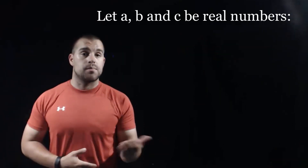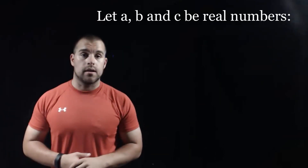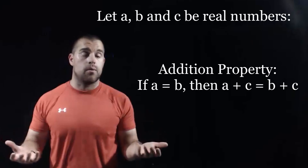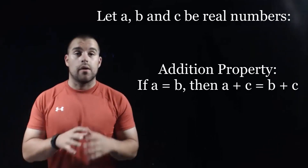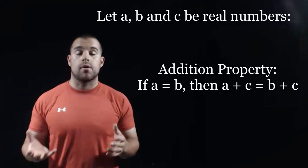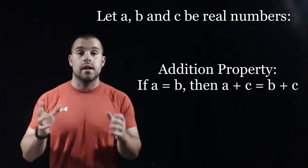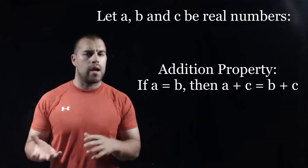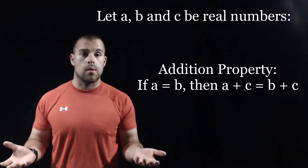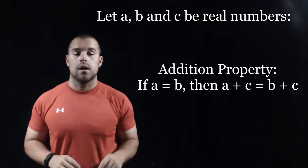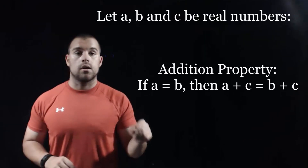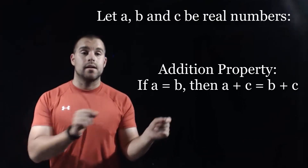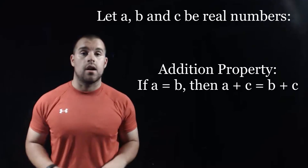Our first property is called the addition property. How the addition property works is: if A equals B — remember A and B are representing real numbers — then what we can do is add C to each side of that equation.